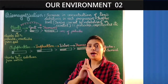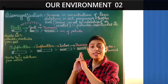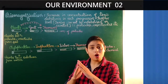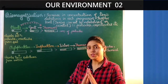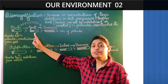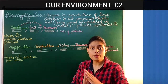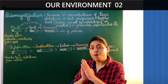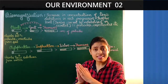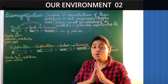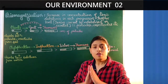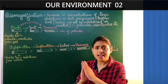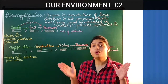Now let us understand biomagnification by an example. We will be studying about the terrestrial food chain as well as the aquatic food chain to understand the phenomenon of biomagnification. Plants grow in soil and absorb water and minerals from soil for their growth. When the plants absorb water and minerals from the soil, they also absorb large amounts of pesticide, insecticide, and DDT-like chemicals which are sprayed by the farmers in the crop field to control pests.